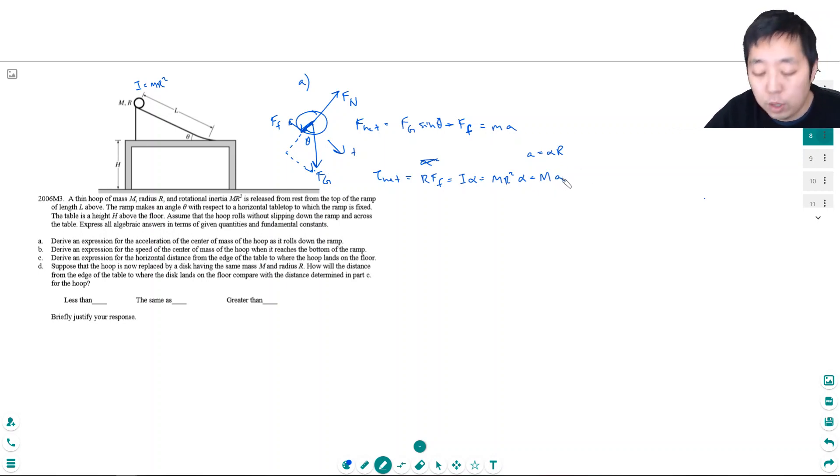So this becomes mr times a. The force of friction equals ma. When I put that into the force equation, I get Fg sin theta minus ma equals ma. So mg sin theta equals 2ma, and dividing by 2m gives a equals one half g sin theta.